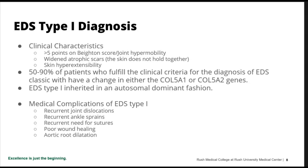You can still have the clinical diagnosis of Ehlers-Danlos type 1 even if we can't find a molecular cause, because there's such variability. Medical complications of EDS type 1 include recurrent joint dislocations, recurrent ankle sprains, recurrent need for sutures, poor wound healing, and aortic root dilatation — though usually it's mild.